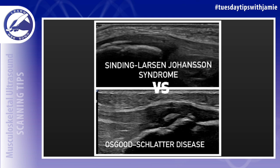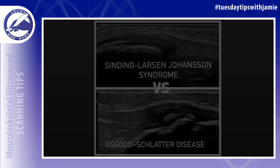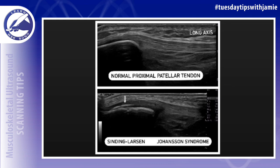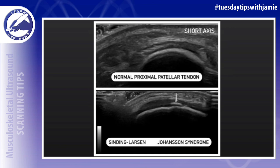They can be differentiated from each other on ultrasound by visualization of bone ossifications at the site where their symptoms are occurring. Here is a side-by-side comparison of a normal proximal patellar tendon compared to one with Sindig-Larsen-Johanssen syndrome in the long and the short axis.